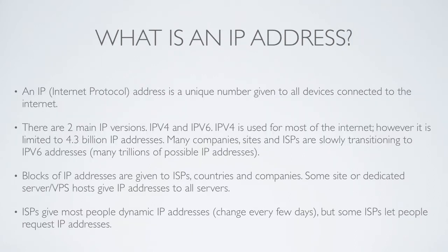What is an IP address? An IP address is basically a unique number given to all devices connected to the internet. Currently about 3 or 4 billion IP addresses are used — it doesn't mean that that many people are connected to the internet at once. A company can be given 64 IP addresses, for example, and that doesn't mean that 64 people are actually using them. There are two main IP versions currently: IPv4 and IPv6. IPv4 is quite old, but it takes a while to transition from, and it is used for most of the internet currently.